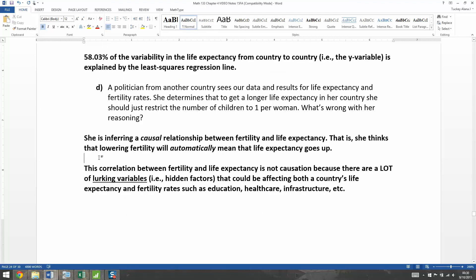Let me type it up one second. There we have it. So this politician is inferring a causal relationship between fertility and life expectancy. That is, she thinks that just lowering the fertility rate will automatically mean that life expectancy goes up. That's not the case. This correlation that she's seeing between fertility and life expectancy is not a causation relationship because there are a lot of lurking variables, other things that are going on like education, health care, infrastructure, et cetera. And that those items, these guys right here, would affect that relationship. They would affect both of those variables.